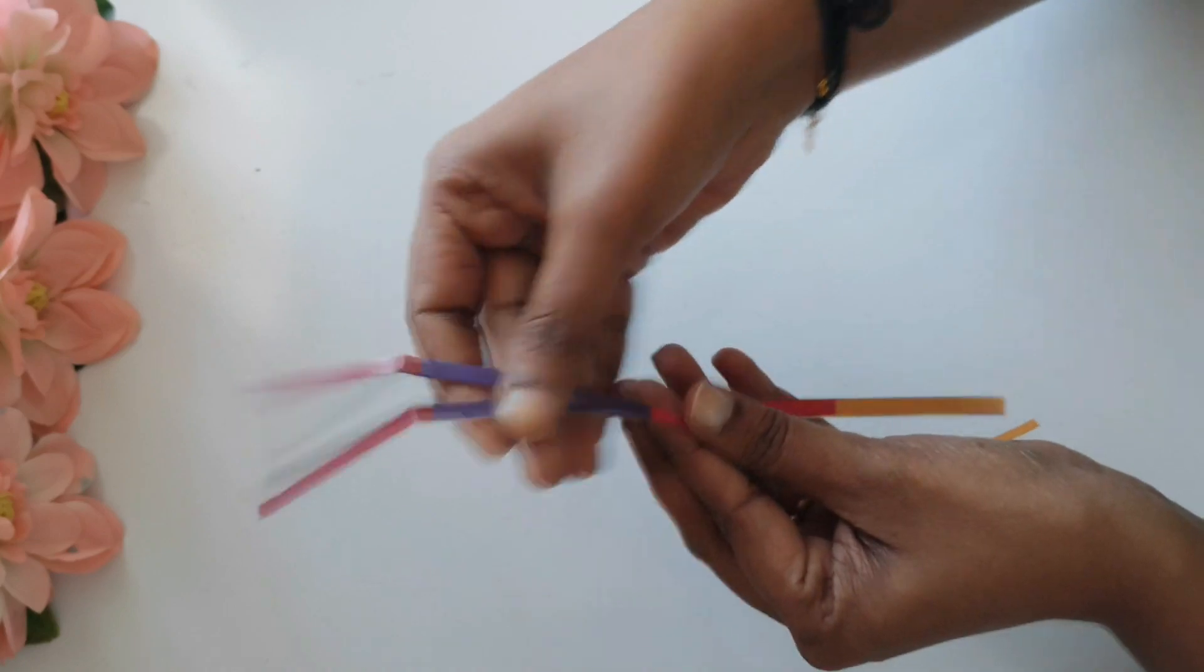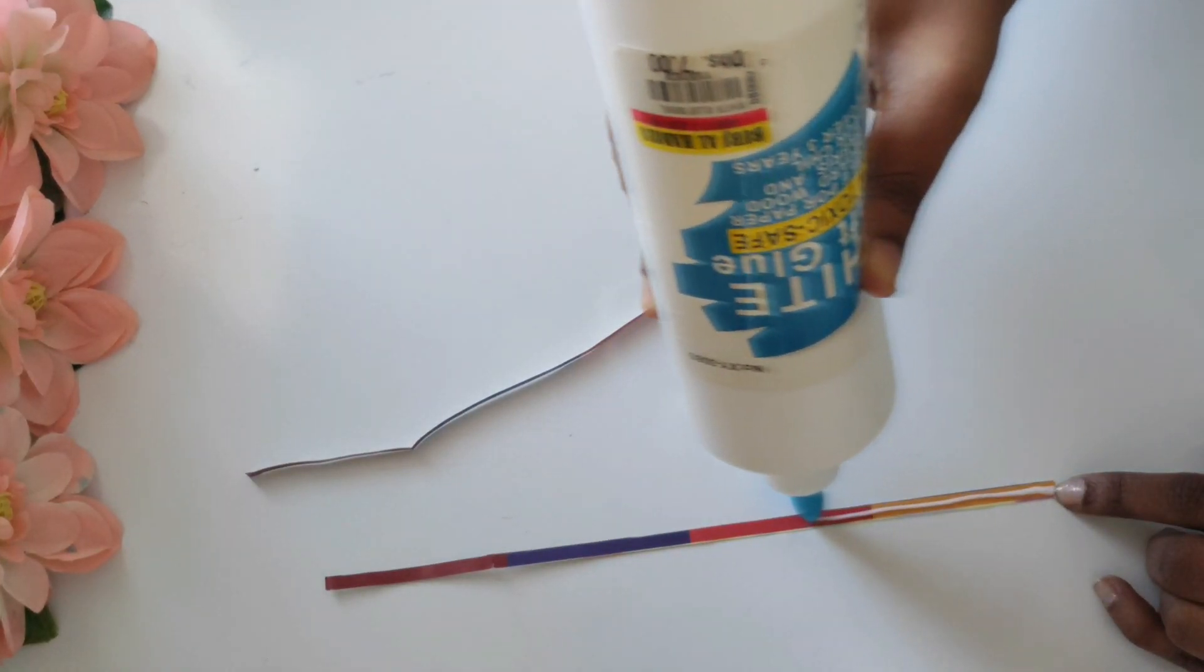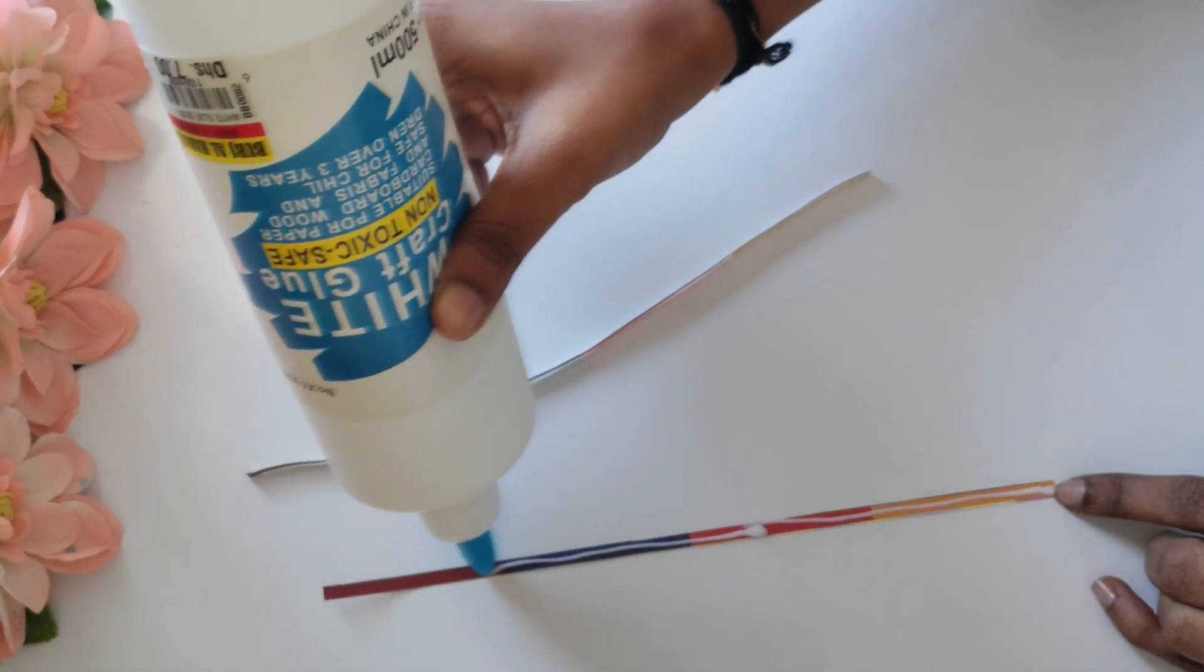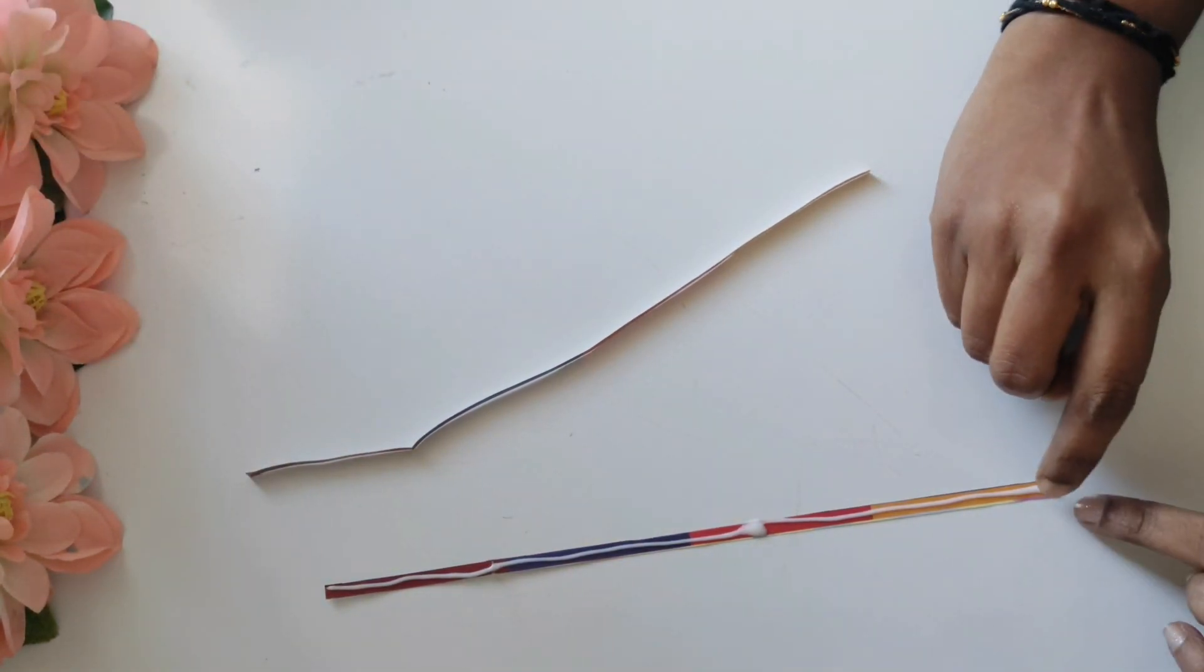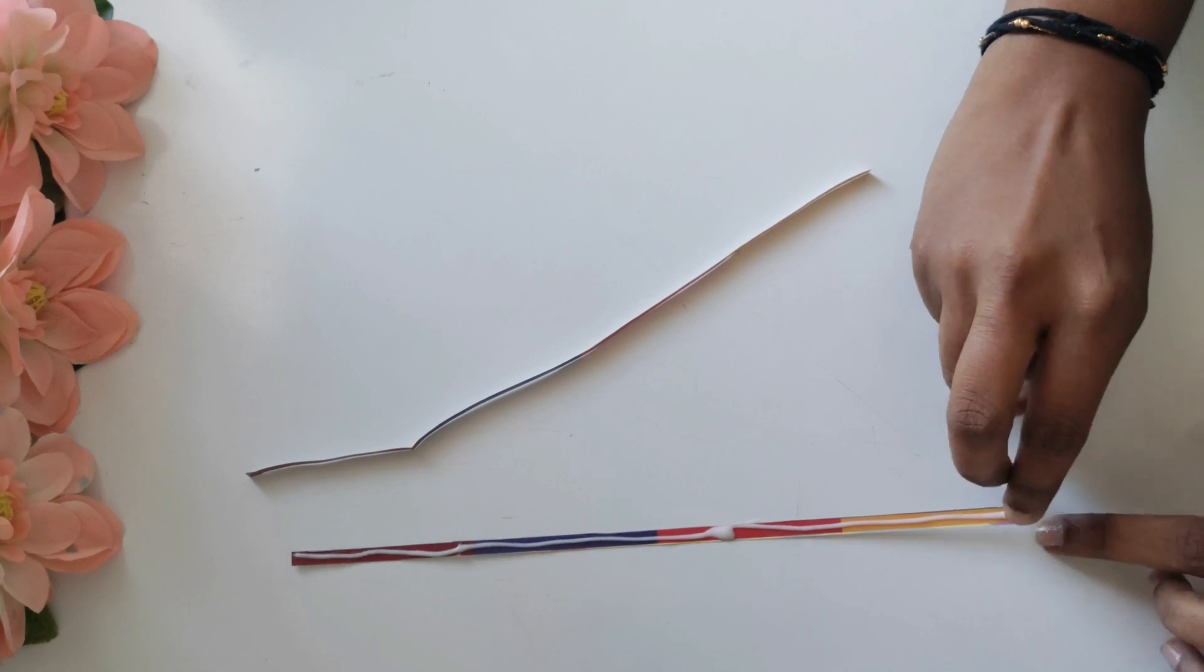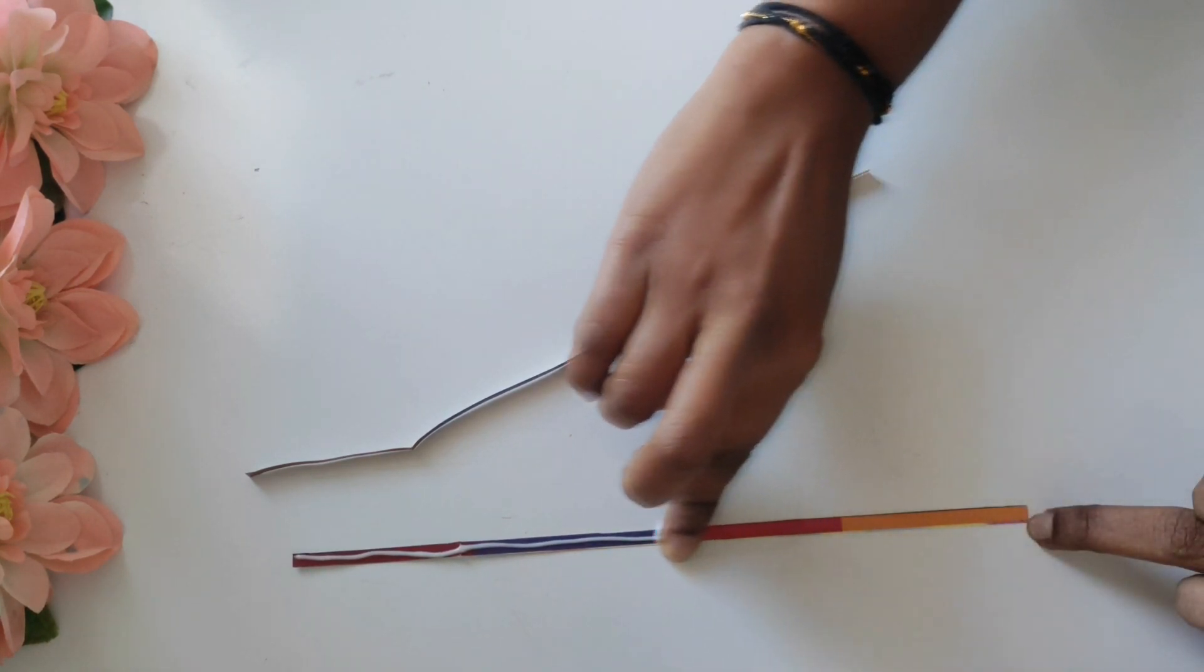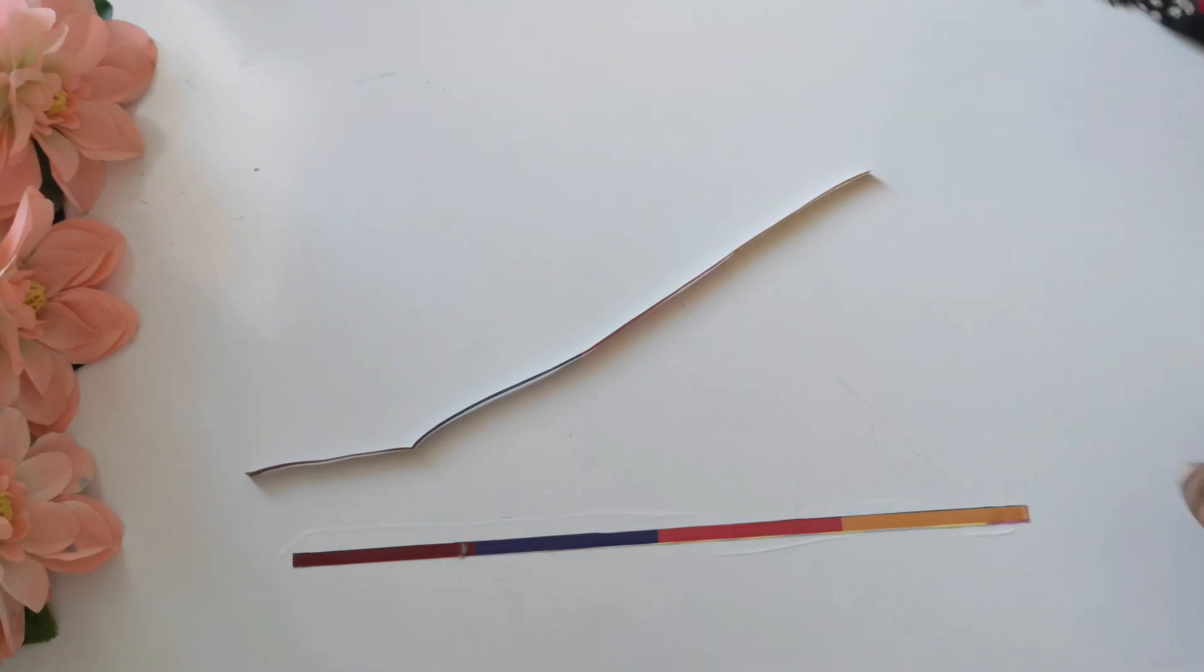Now what you need to do is just stick these two pieces together, and then your double-sided tape will be ready.